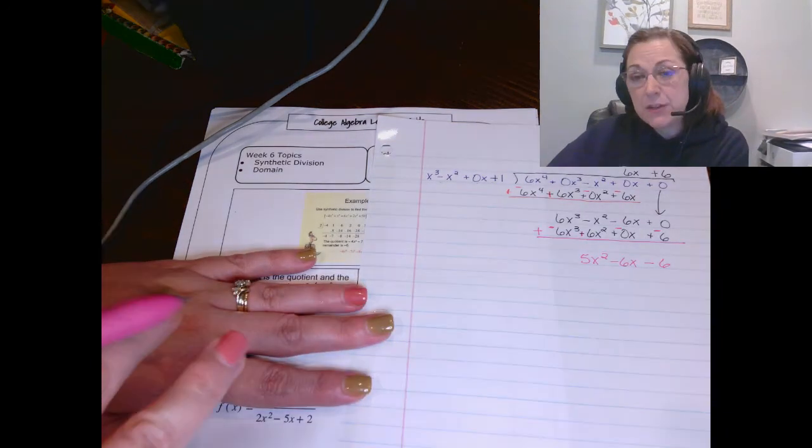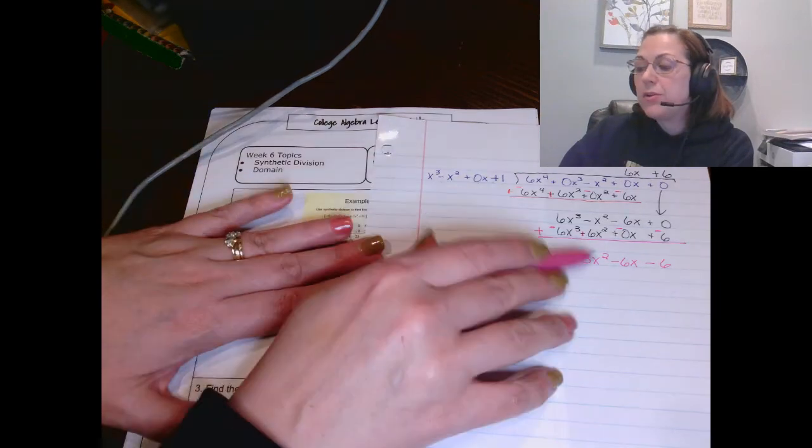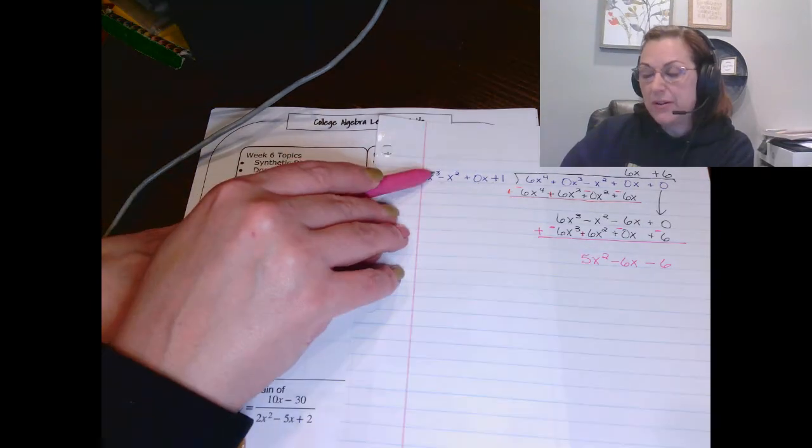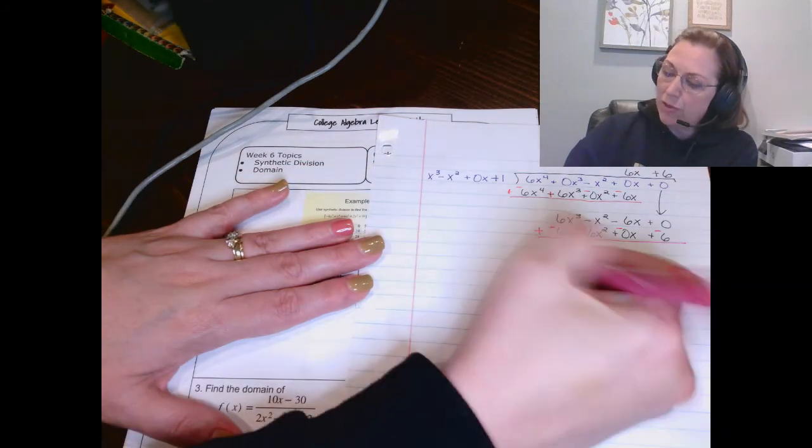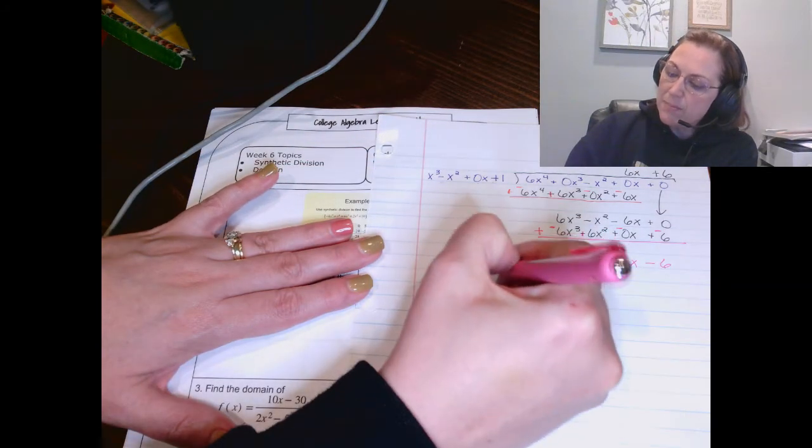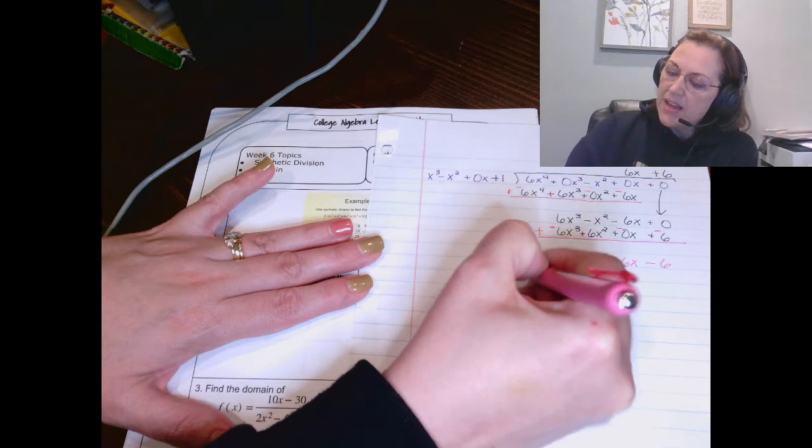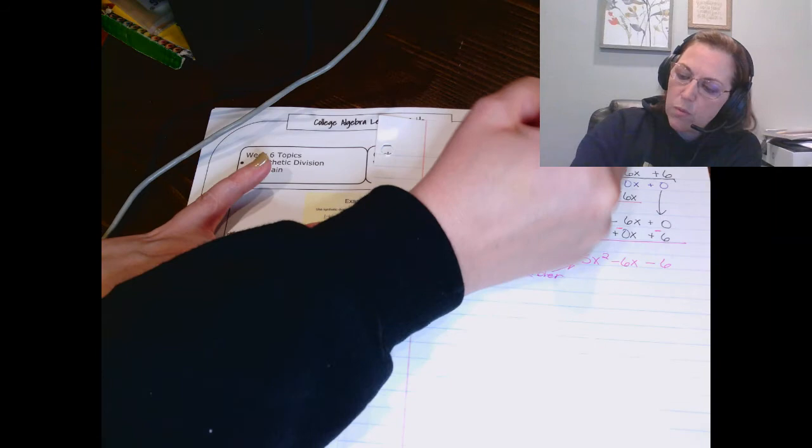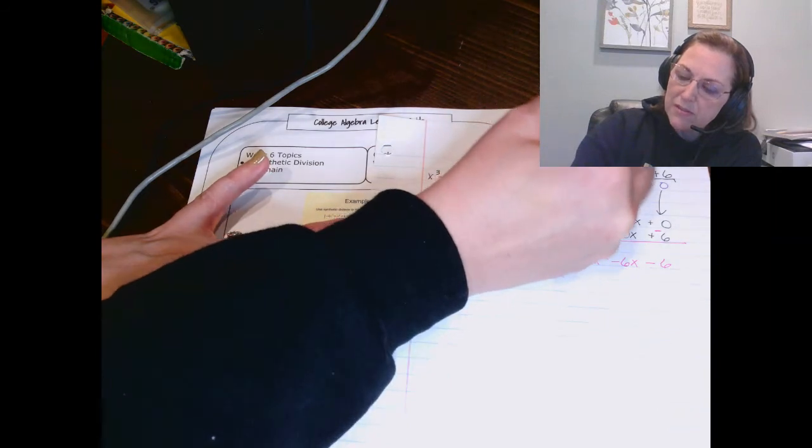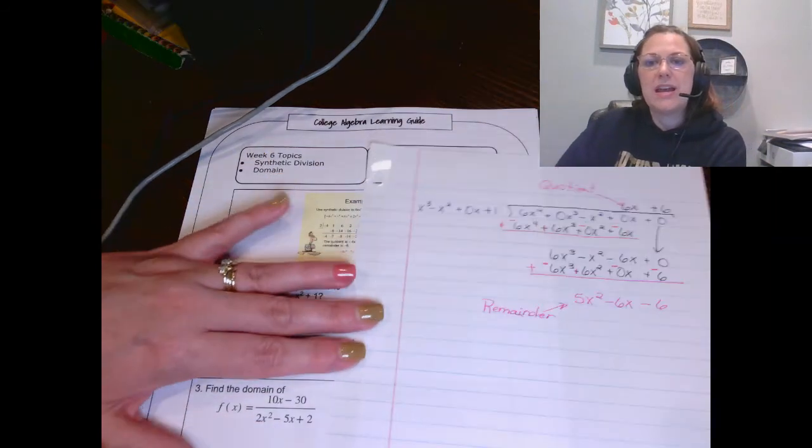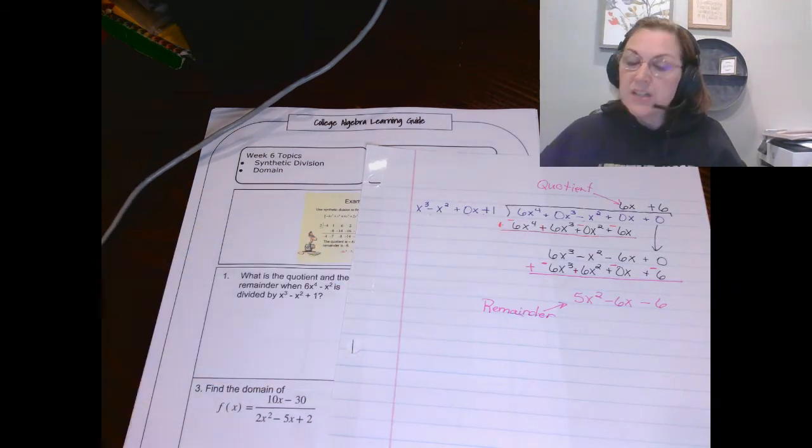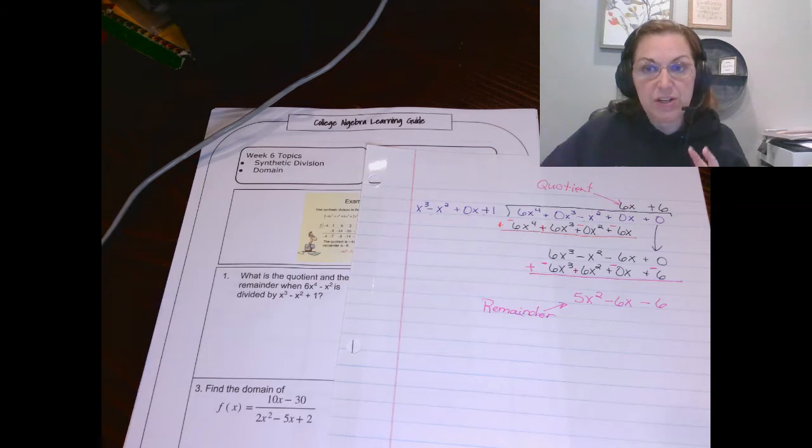Now we have nothing left to bring down. And I want you to notice that the power here is smaller than the power here. That tells me this is my remainder. This is my remainder. And this is my quotient. So I've got my remainder and my quotient there. Take your time with the long division. It takes a bit of process. Talk yourself through it. Just like I ask those questions of myself, I want you to ask them of yourself to help you as well.